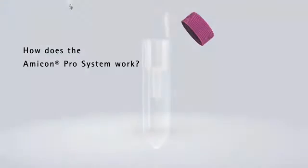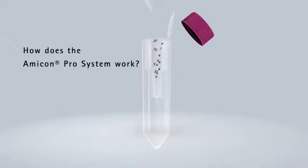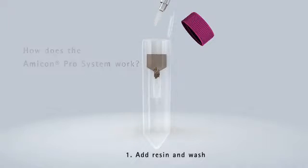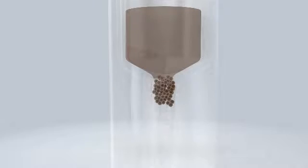How does the Amicon Pro system work? First, load the device with your resin and equilibration buffer of your choice. The resin forms a packed column in the exchange device for optimized binding.